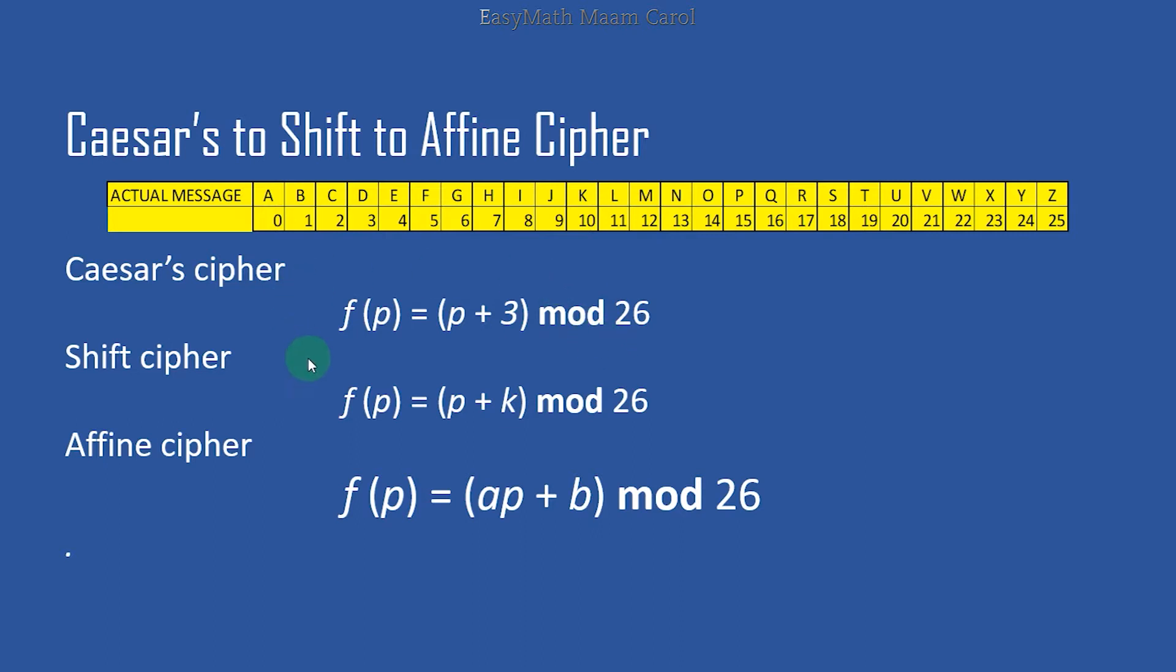Now, in our second video, we can still further generalize the Caesar cipher. It doesn't always have to be 3. So we said, why don't we make it as a variable? And this was the result: f(p) = (p + k) mod 26, wherein this 3 constant that Caesar used, you can now choose as an encryptor. You can now choose what number you want to replace here. It can be positive, it can be negative.